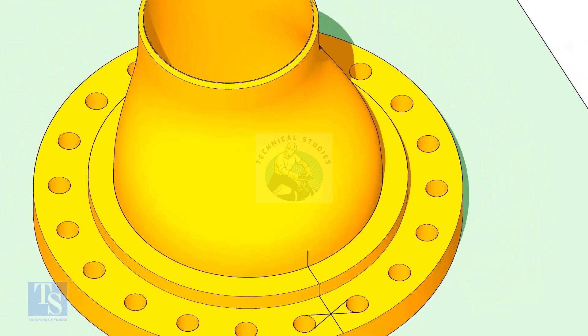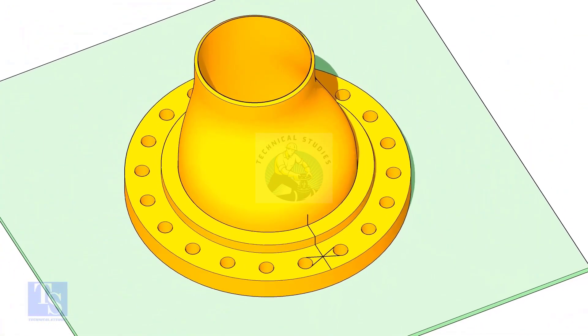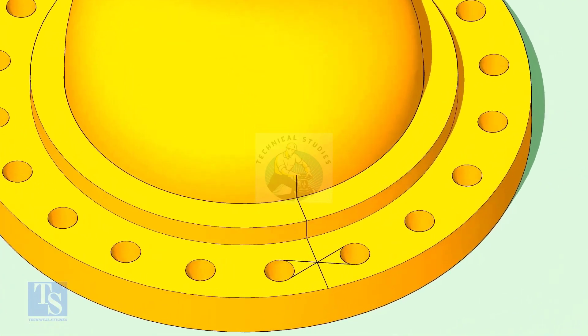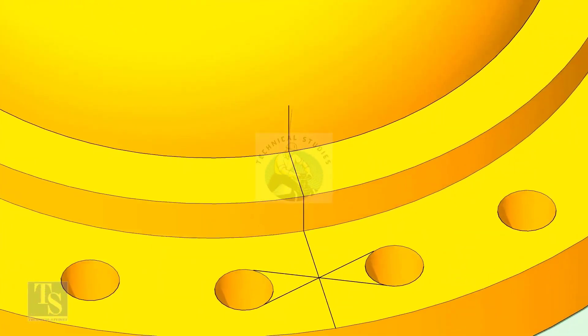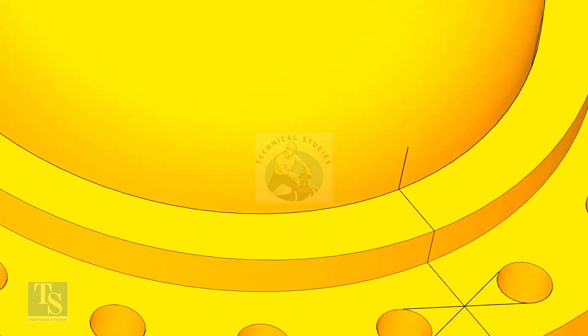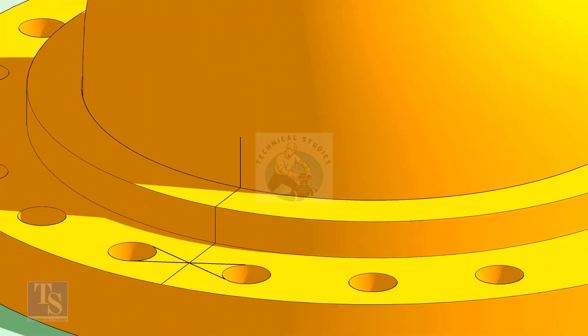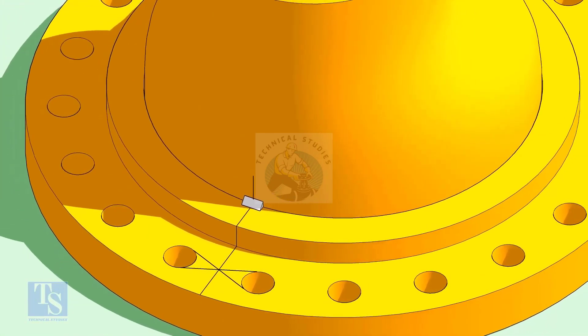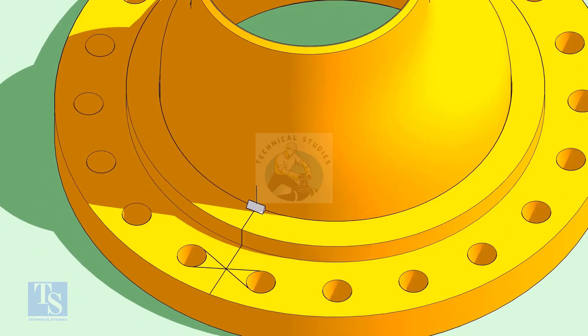Now put the reducer on the nuts in the flange. Match the center lines of the flange and the reducer. Tack weld 0 to 180 and 90 to 270 degree sequences.